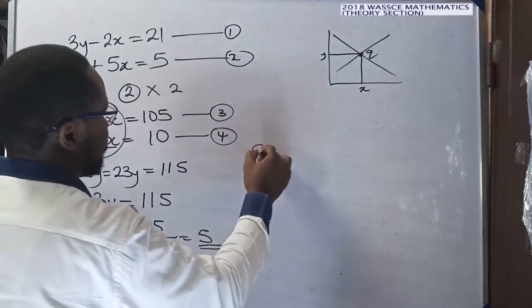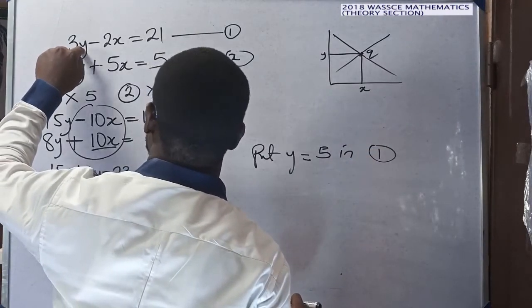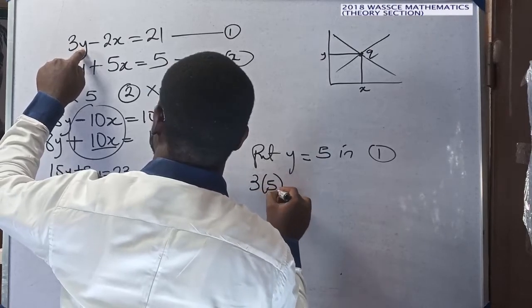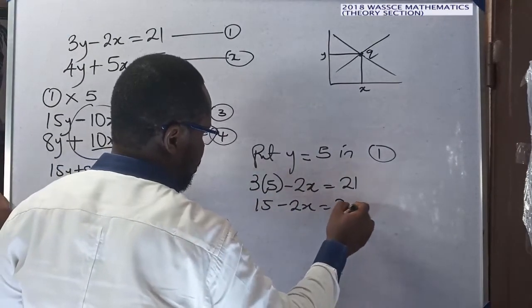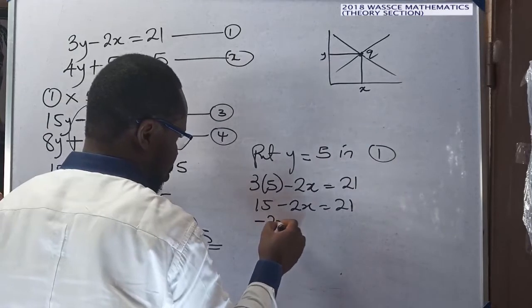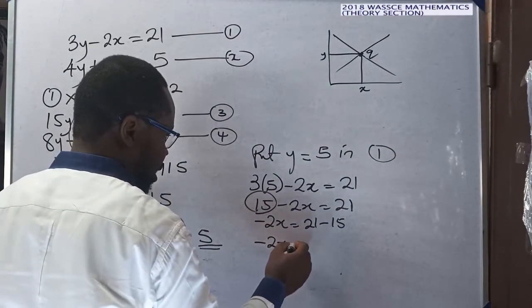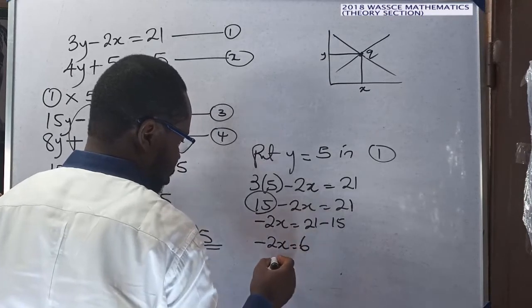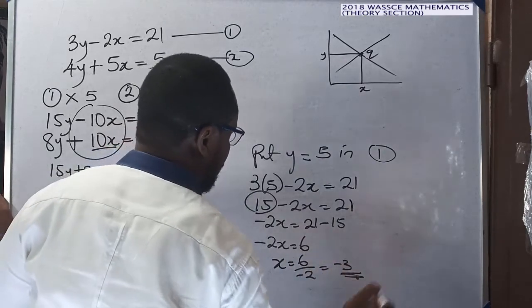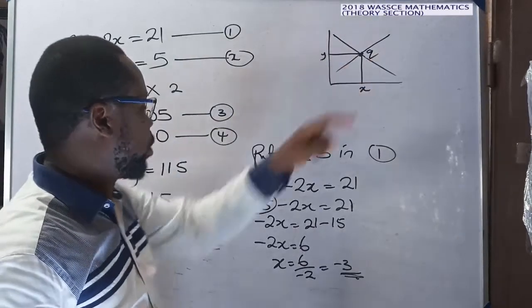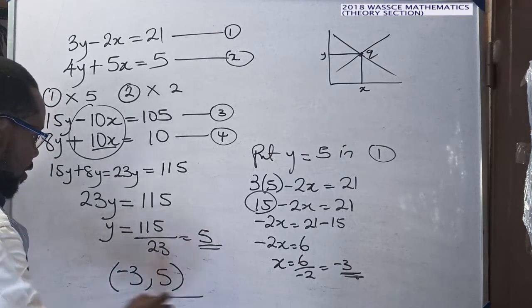Having found y equals 5, I substitute into equation one. So 3 times 5 minus 2x equals 21, giving 15 minus 2x equals 21. Taking 15 to the other side: minus 2x equals 21 minus 15, which is 6. So x equals 6 divided by minus 2, giving x equals minus 3.